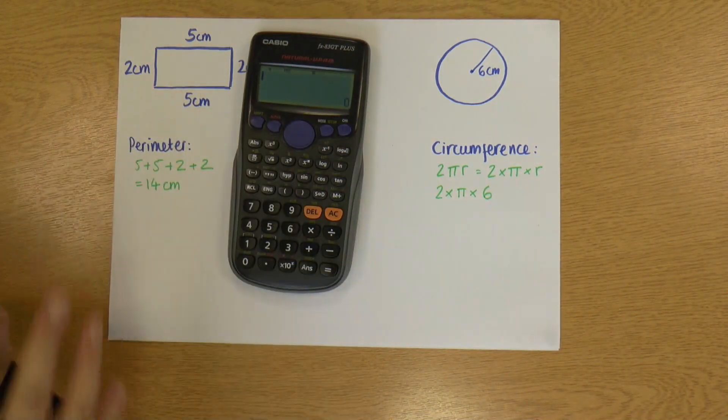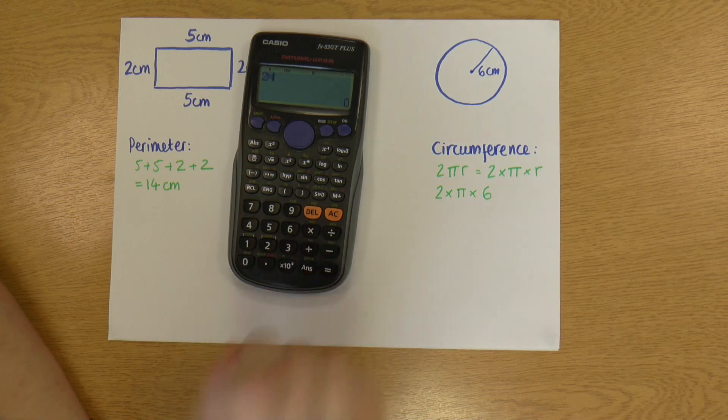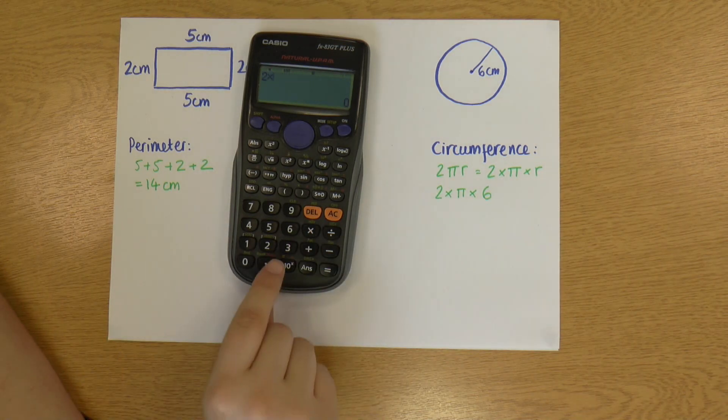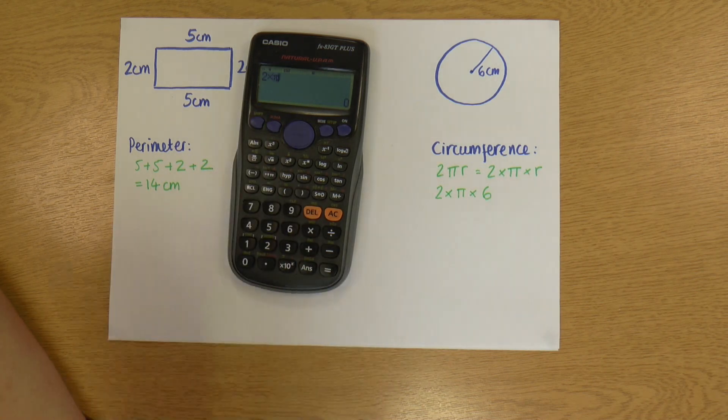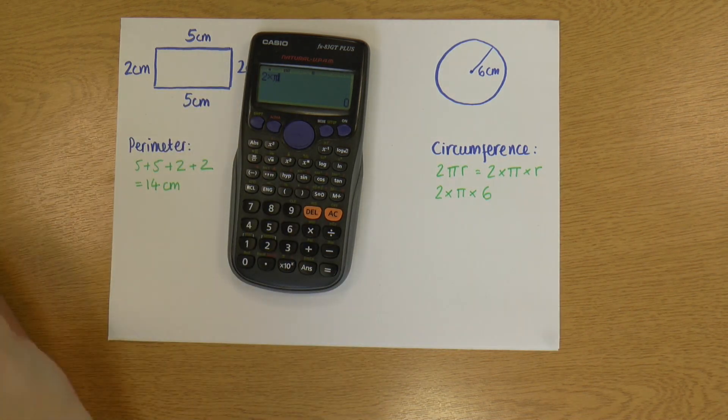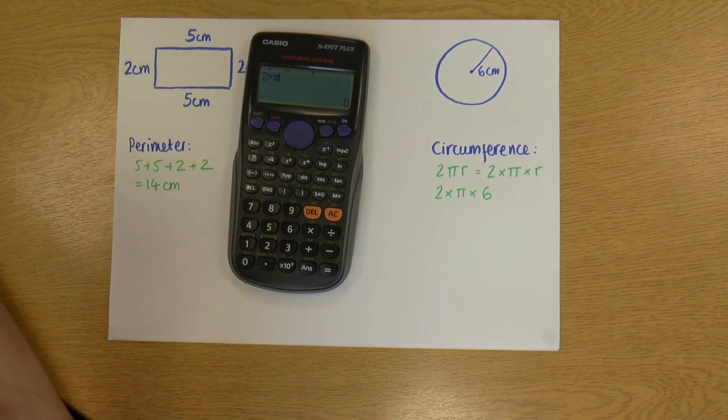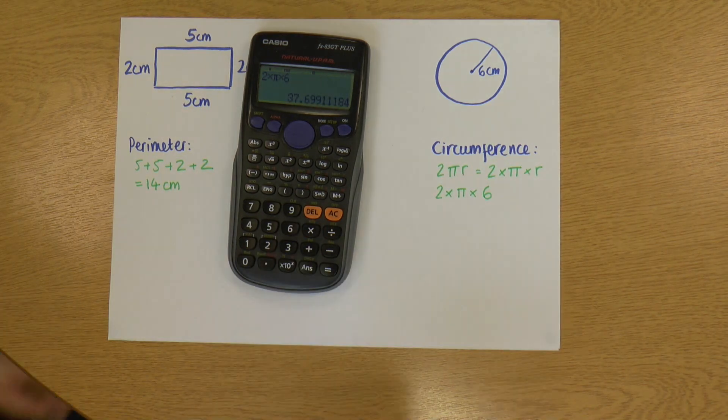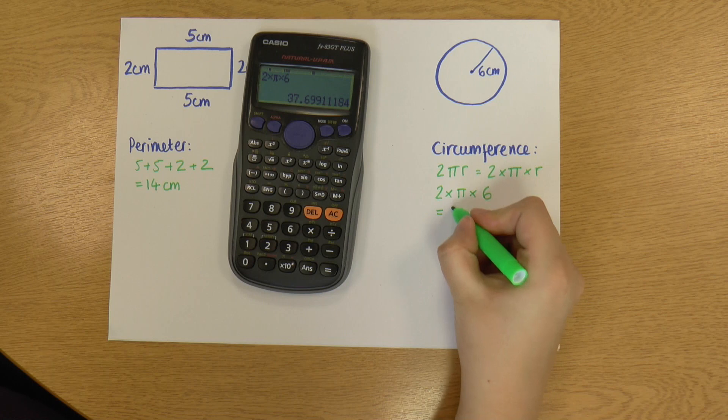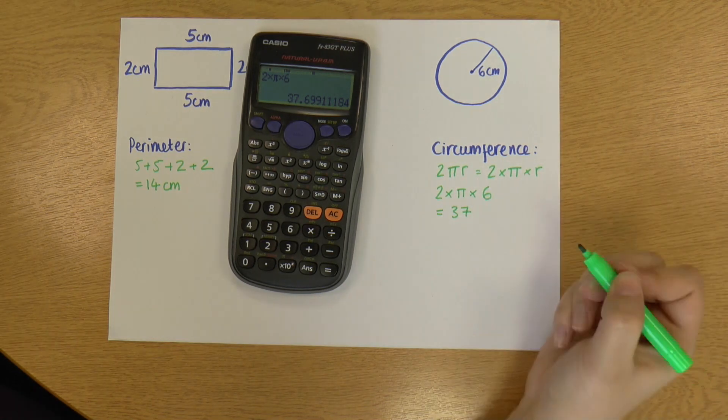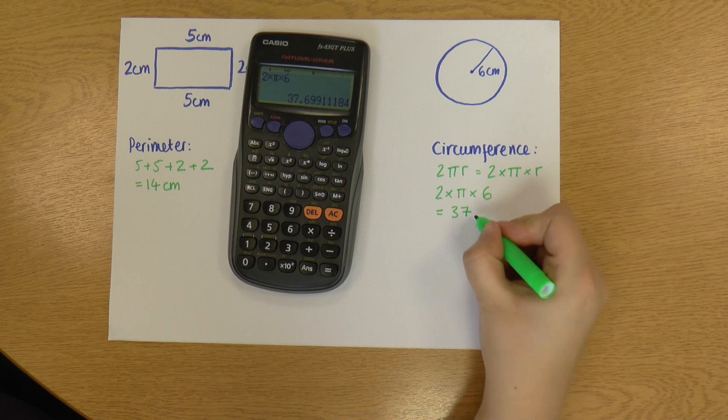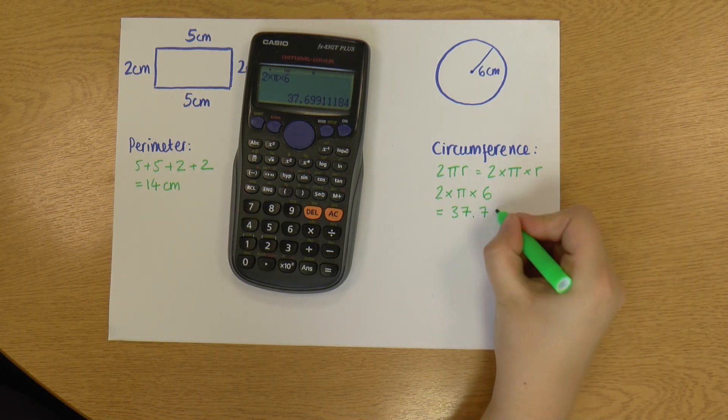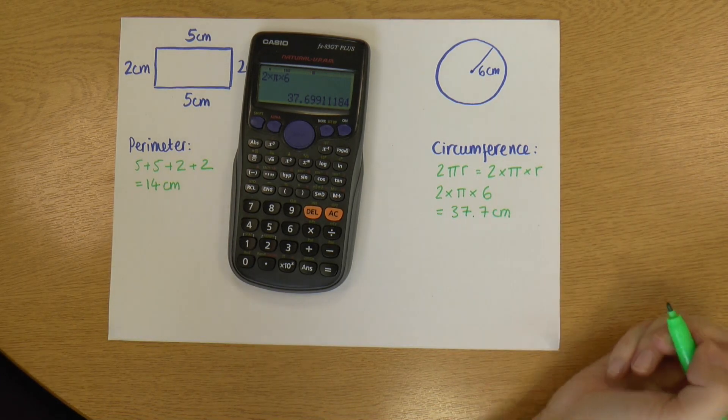Let me grab a calculator. So we're doing 2 times... Now on my calculator, my π is this little yellow symbol down here. So I go to shift π and you can see it come up on the screen as π. So that uses the full π number rather than just 3.14. And I'm timesing that by six, which gives me 37.699, which I'm going to round to 37.7. And again, it's just a length, so it's in centimeters.